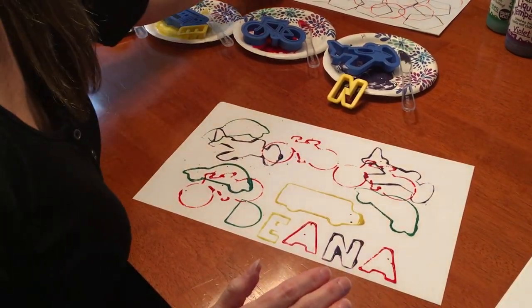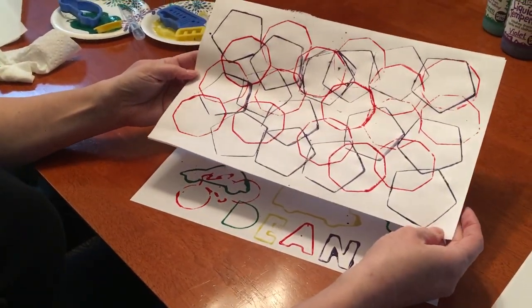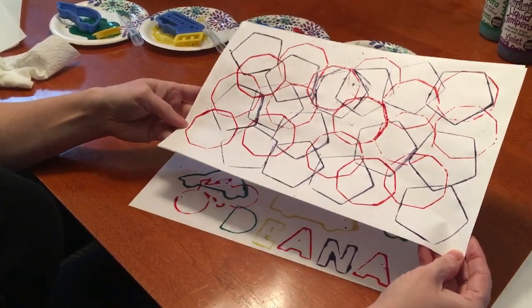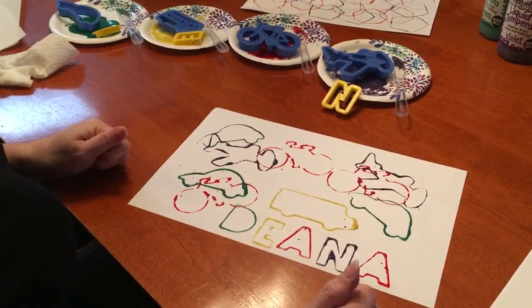I also experimented earlier with shapes. I just used an octagon and a pentagon and just overlapped them with two different colors. Again, it would be the students' choice of how they want their artwork to look. So that's it for cookie cutter painting.